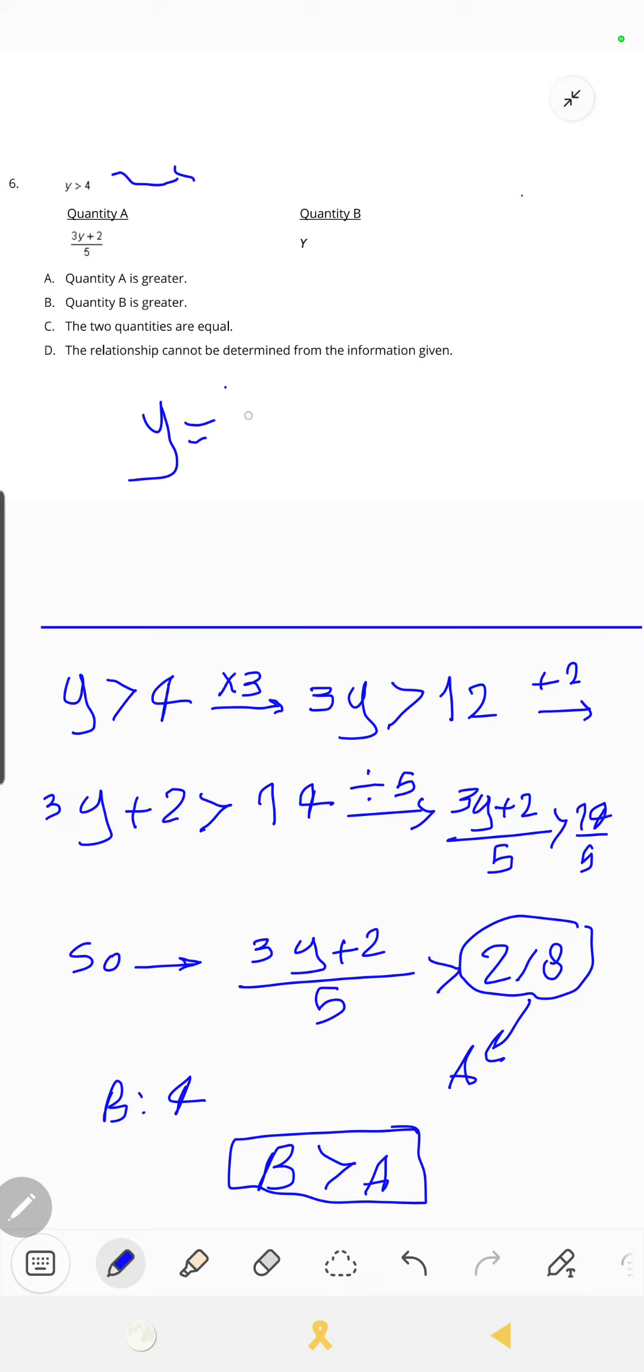Now I have 3 times 6 plus 2 divided by 5. We can solve it: 3 times 6 is 18, plus 2 divided by 5. 18 plus 2 is 20, and 20 divided by 5 is 4.